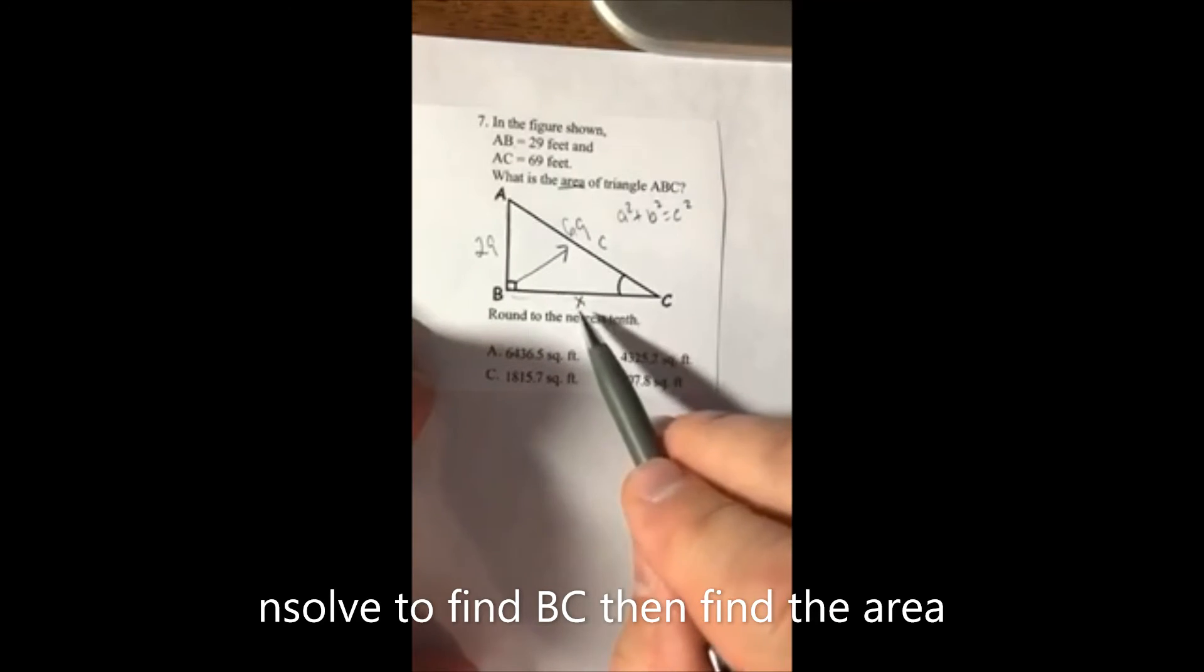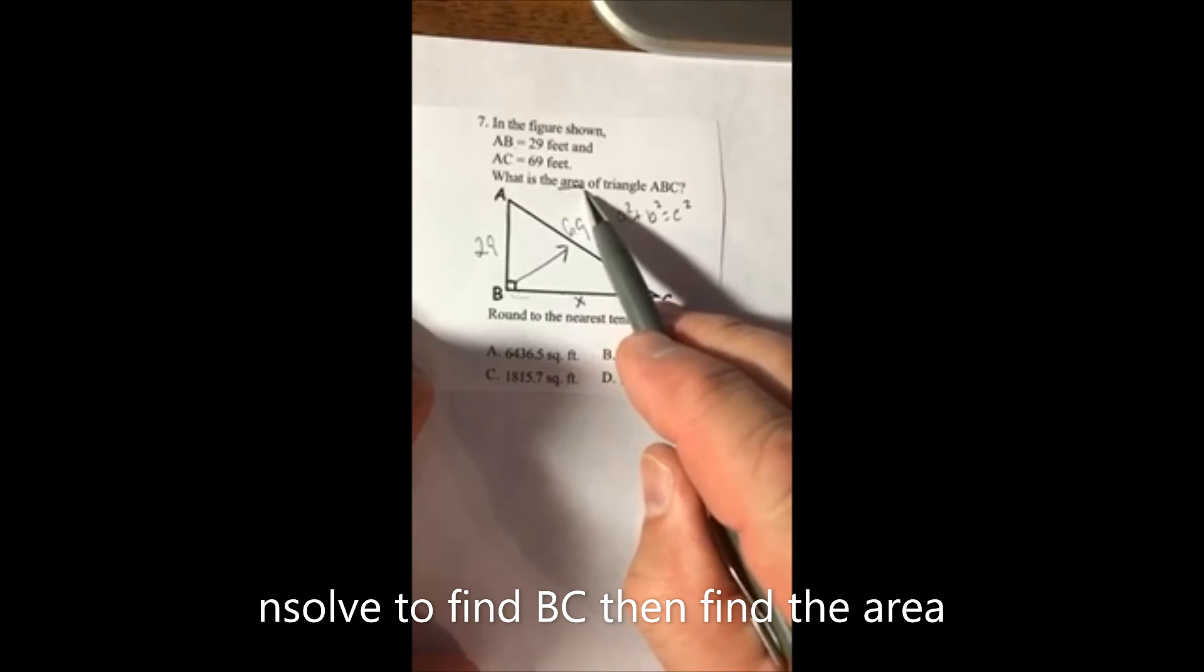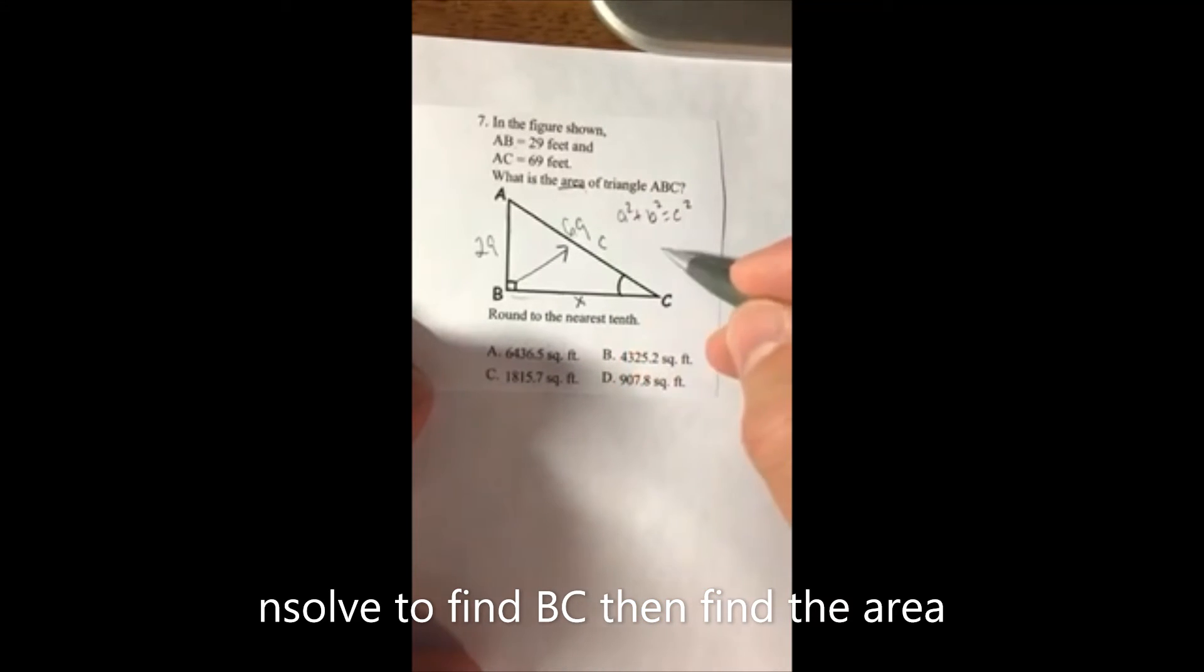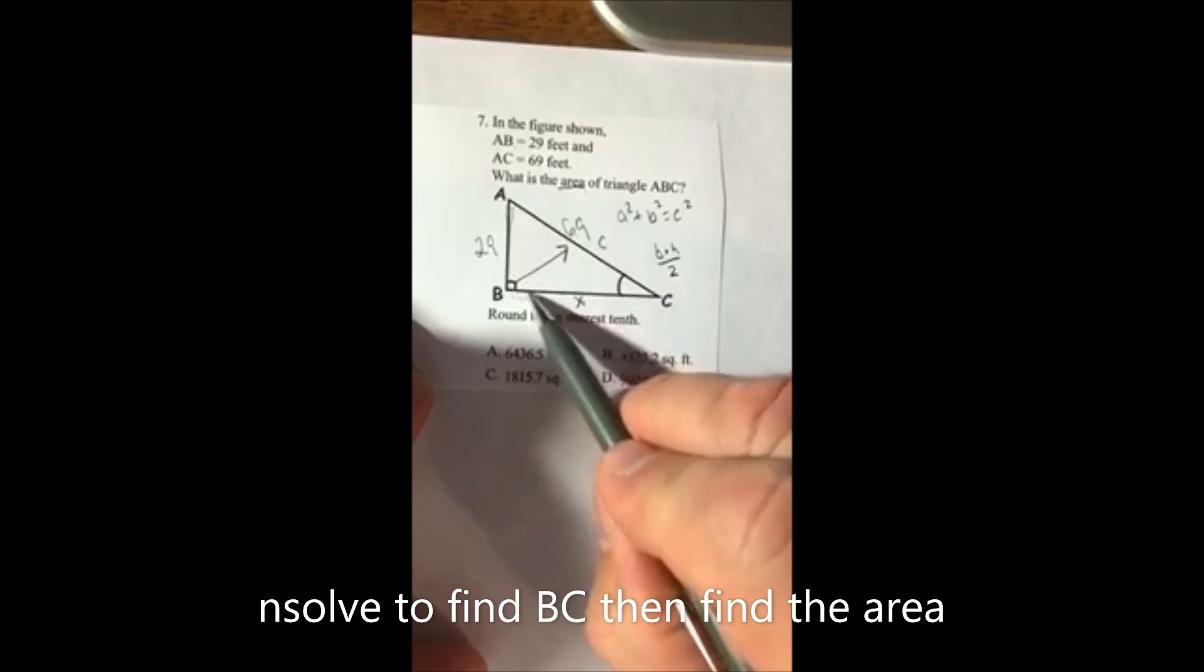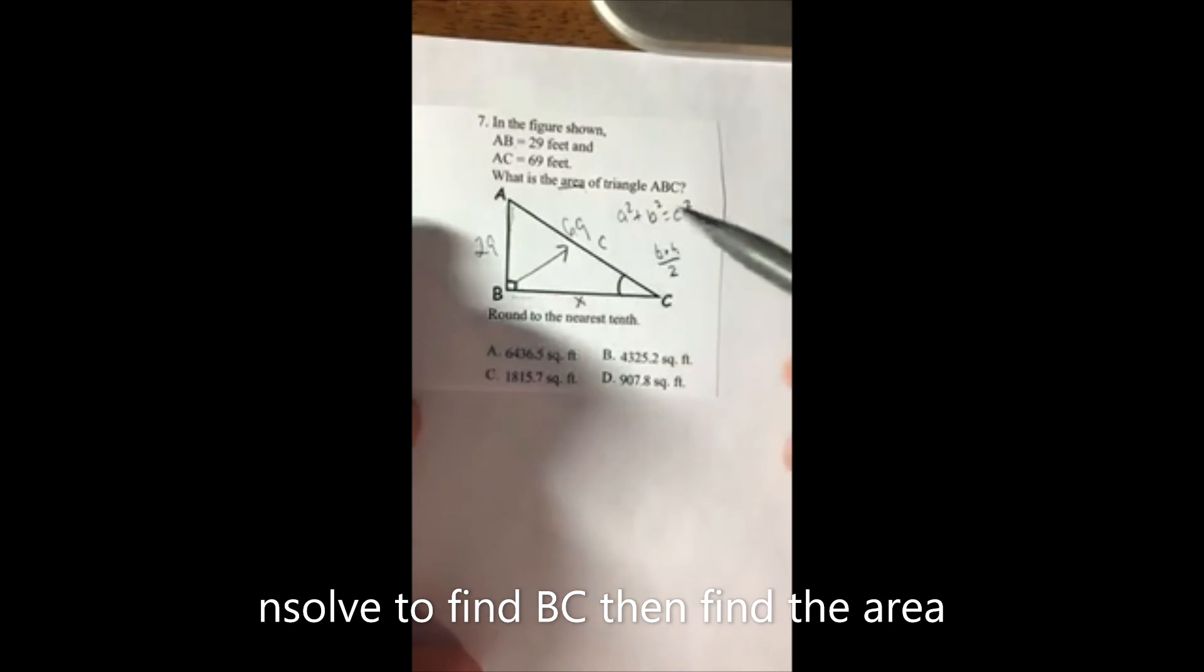Remember, to answer the question we must find the area of the triangle. The formula is base times height divided by two, where your base and height are the two sides that form the 90-degree angle.